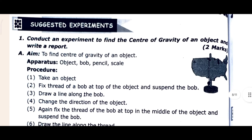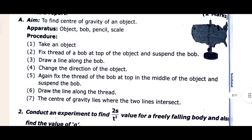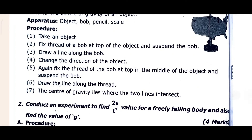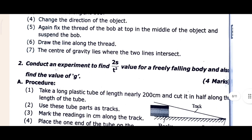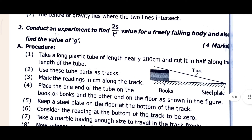Now you can see the Suggested Experiment section. The first experiment is a conductor experiment to find the center of gravity of an object and write a report. It includes the aim, apparatus, and procedure — how you will do it. If it is complete, then come to the second experiment.